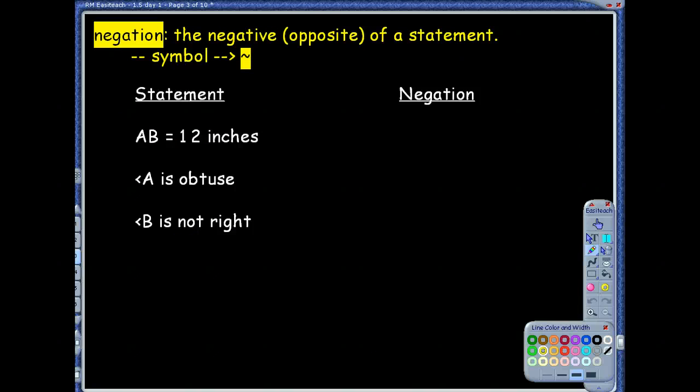This next term is going to lead into some other if-then statements. So far we have two if-then statements: the conditional and the converse. We're going to actually learn two more, so there's four of these out there. This word, negation, is actually going to be applied to the next two. Negation basically means the negative or the opposite of a statement. It's not like you're going to throw a negative symbol into the statement. There is a symbol for negation, that little squiggly, I think you call it the tilde.